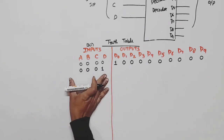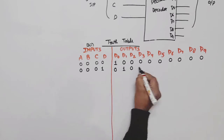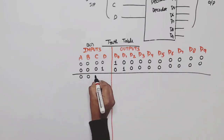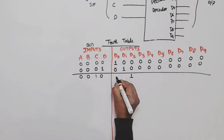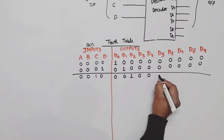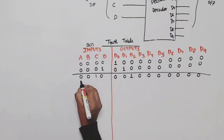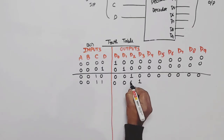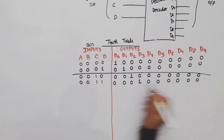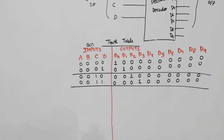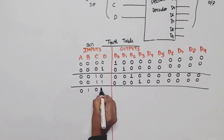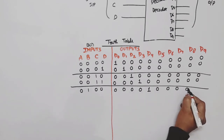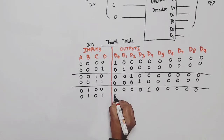Next combination 0001 — decimal equivalent is 1, so D1 will be high, remaining all zero. Next 0010 — decimal equivalent is 2, so D2 will be high, remaining all zero. Next 0011 — decimal equivalent is 3, so D3 will be high, remaining all zero. Next combination 0100 — this is 4, so D4 will be high, remaining all zero.